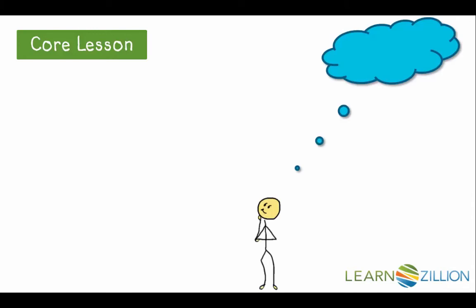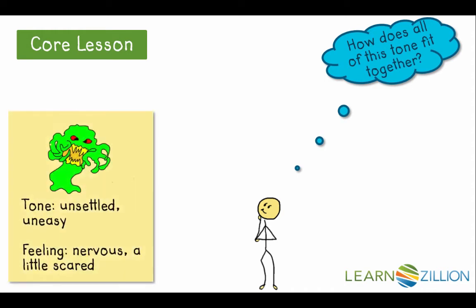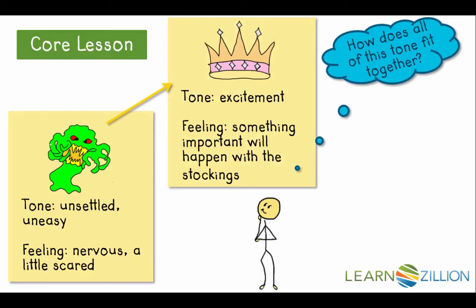So let's decide how all of this tone fits together. At first, with that dim, gaunt monster, the tone is unsettled and uneasy. This is how I see Mrs. Sommers feeling at the beginning of the story — she's about to go shopping, she has a plan, but she still seems a bit uneasy about her trip. The next tone appears with the tiara figurative language, which also mirrors a change in Mrs. Sommers. She's excited to be offered a chance to touch the silk stockings.